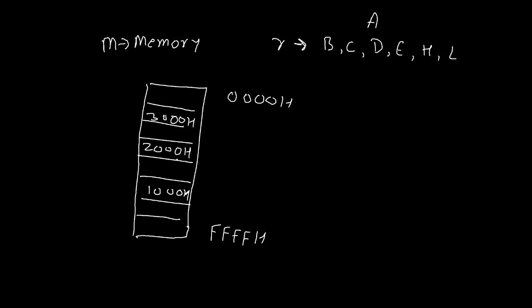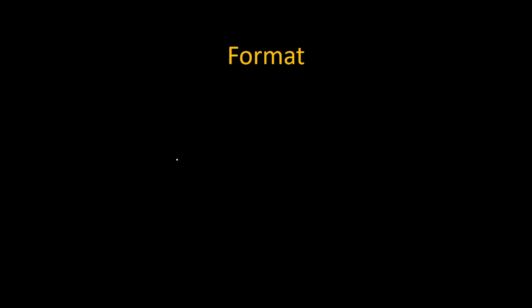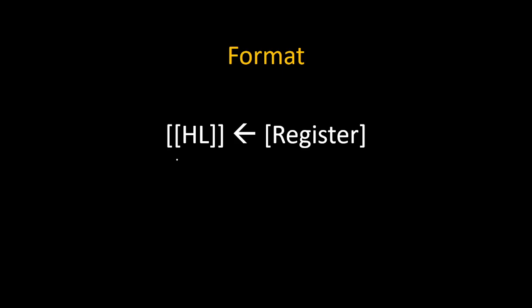Now let's come back to our original instruction. Now, what will happen exactly inside this? We will discuss the format of this instruction. What we will transfer? We will transfer the content of the register to the content of the content of HL. Suppose the instruction is MOV M, C.